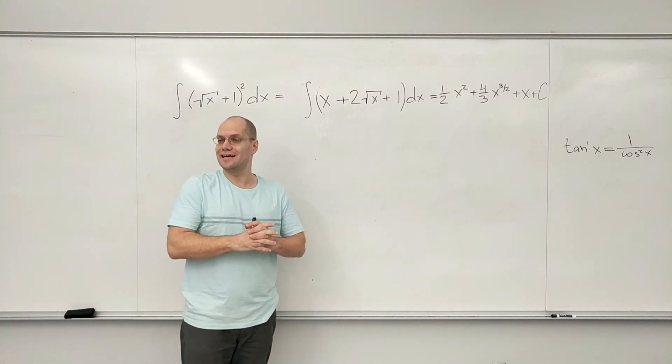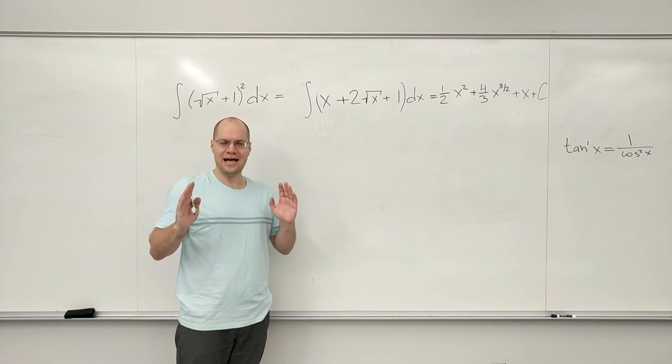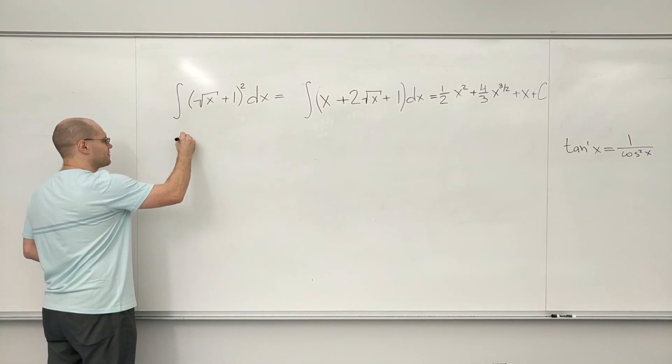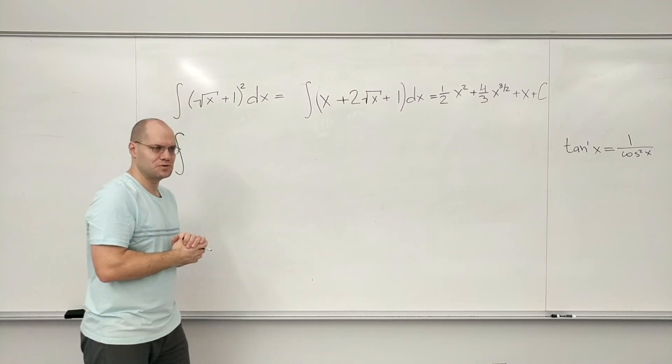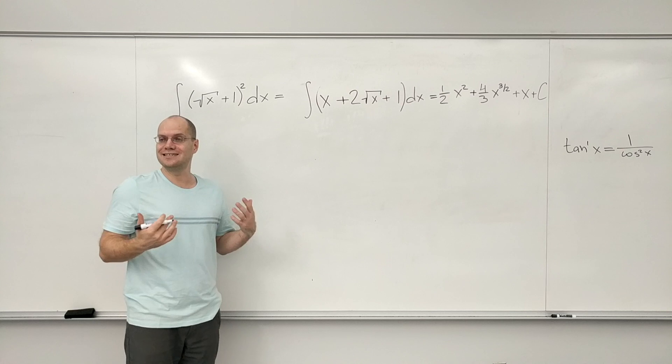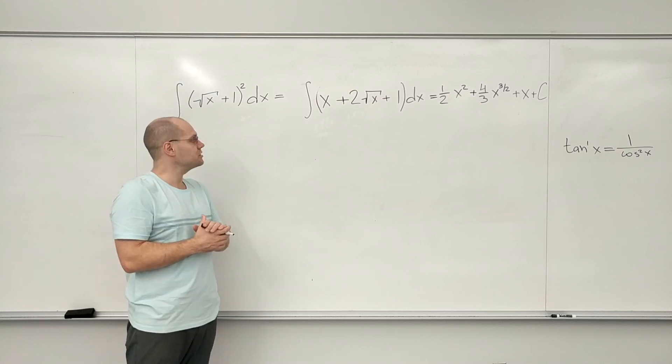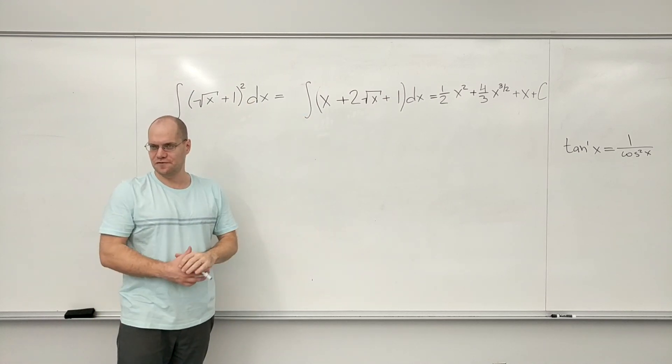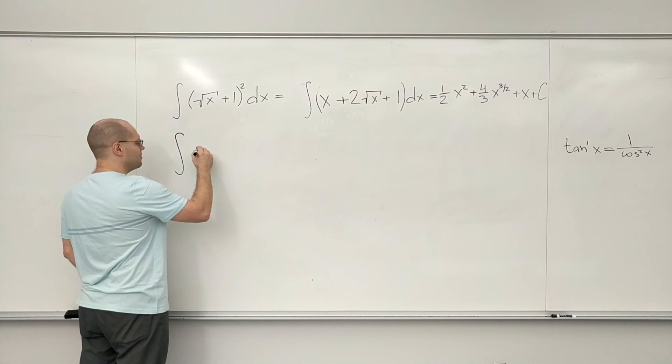I'm going to throw in another element which will seem annoying right now but will actually make sense when we meet again next time and start looking at far more advanced integration by substitution. I will start using a different letter for the independent variable because I want you to get used to the fact that it could be x, it could be y, it could be z, and it makes no difference in the world. It will actually help you next time. So how about this one?